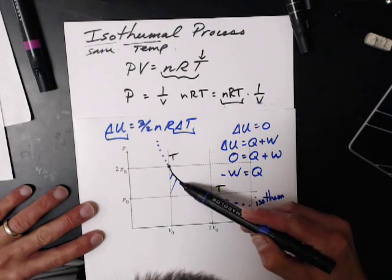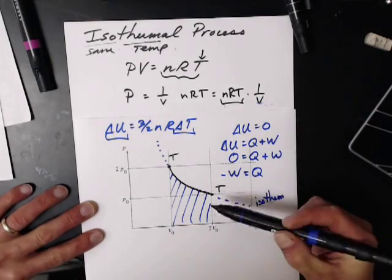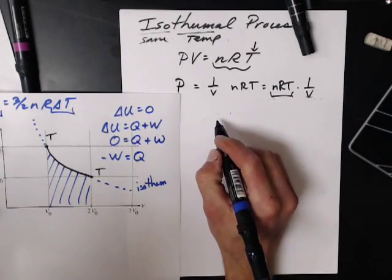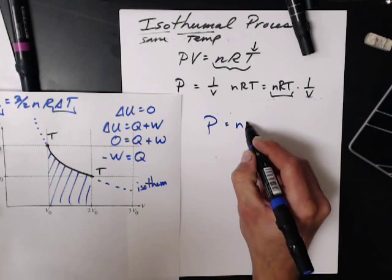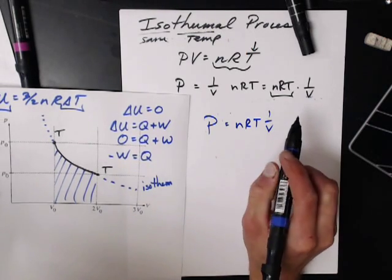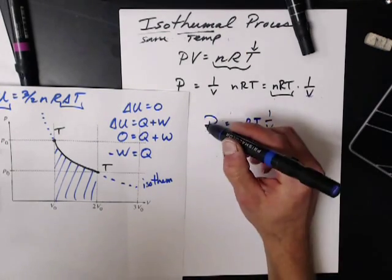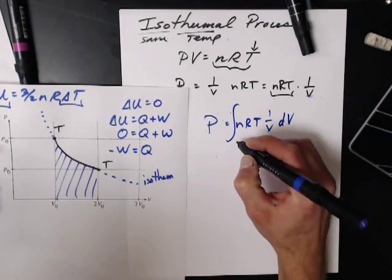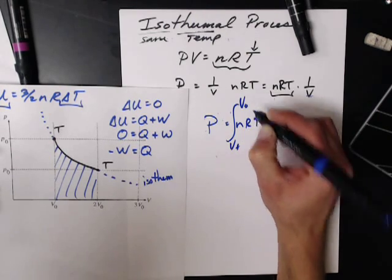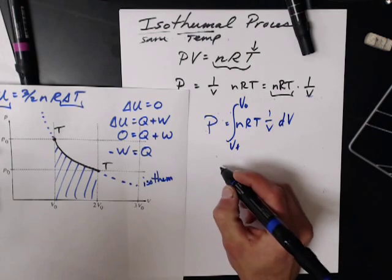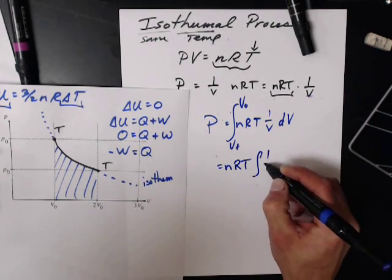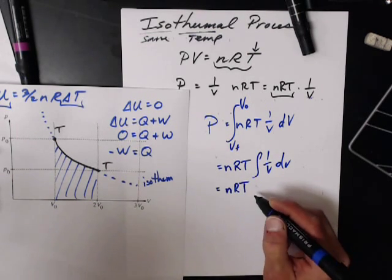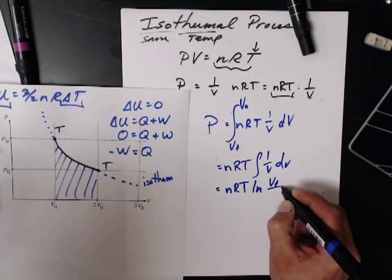How much work is done? It's the area under the curve. So we have our curve, P equals NRT times 1 over V. I want to take the integral of this from V initial to V final. The integral of 1 over V dV gives us NRT times the natural log of V final over V initial. This tells me how much work is done.